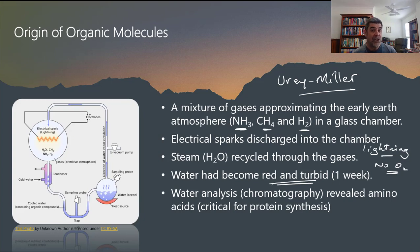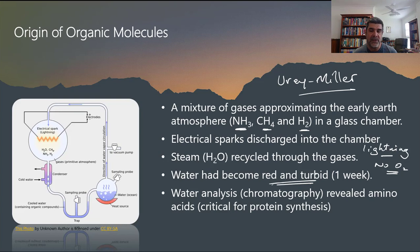Subsequent experiments and repetitions of this experiment, with some slight modifications in the early atmospheric mixtures, did create different types of amino acids. Remember, we need 20 of them for all the different sorts of proteins we recognize that are used in our bodies. Even without that great range, there still needed to be a reasonable number of different types of amino acids in order for these early organic molecules to start to work.